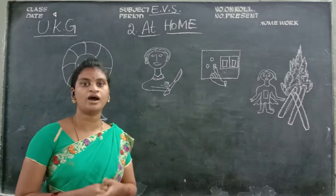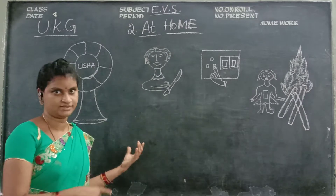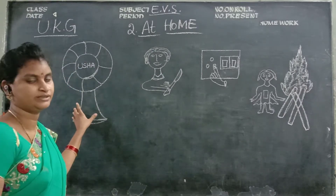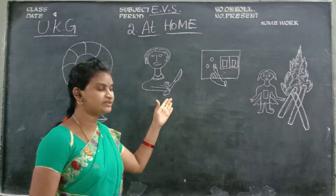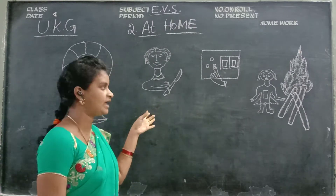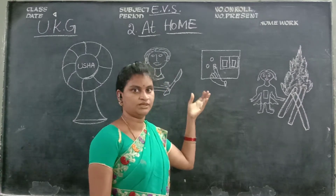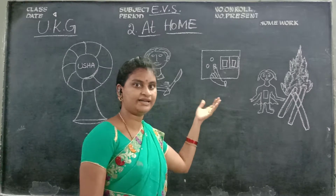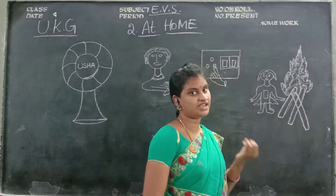Now we are going to learn about head form habits. I drew some pictures on the board. See, what is the picture? This is a fan. What is the picture? This is a knife. What is the picture? This is an electric switchboard. This is a fire.